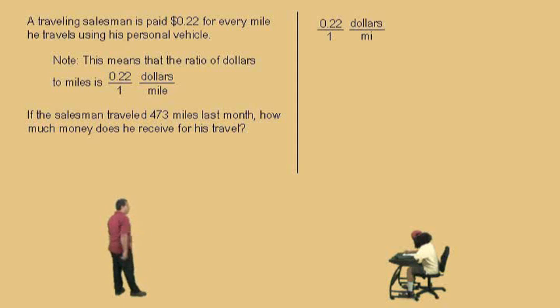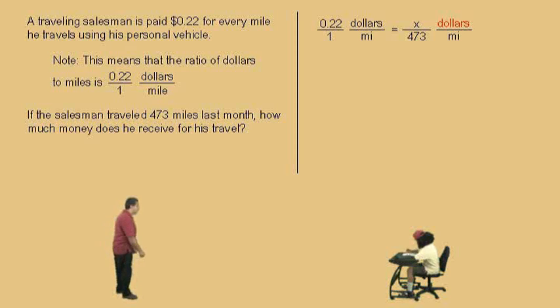Okay, so we'll go ahead and write our first ratio, .22 dollars over 1 mile. Okay, and x is on top because we're looking for the dollar amount, right? And we put 473 miles on the bottom because that's how many miles he traveled, right? And so, notice the units match up. We write a proportion problem and we do what, Charlie?